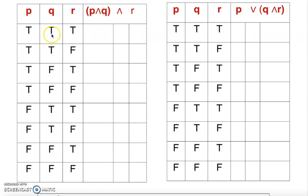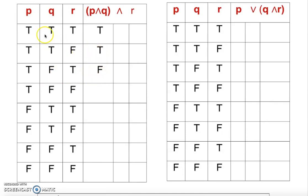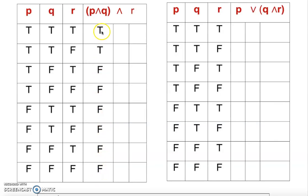So comparing P and Q: true and true is going to be true. True and true again is going to be true. True and false — it's not happening, so it's going to be false. One of them being false makes it false, because both must happen at the same time — that's conjunction or 'and.' So the remaining rows will be false, false, false, and false.